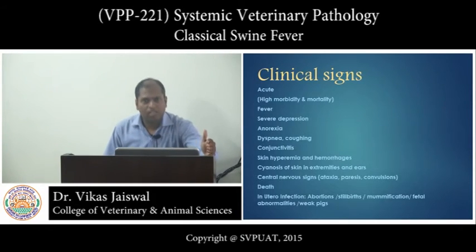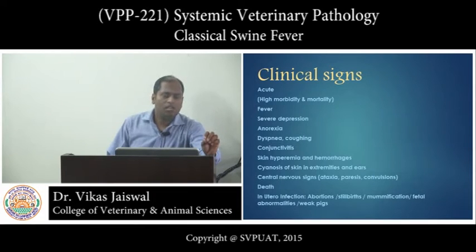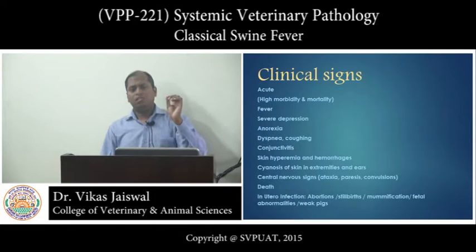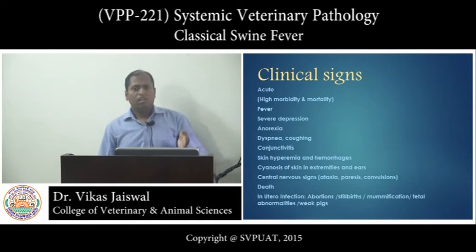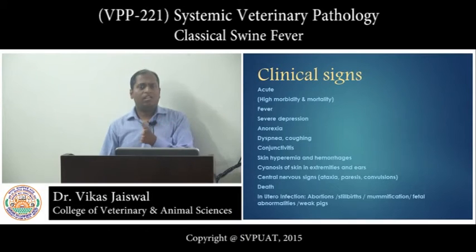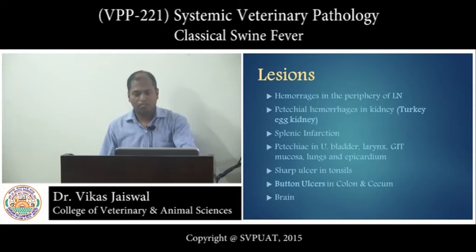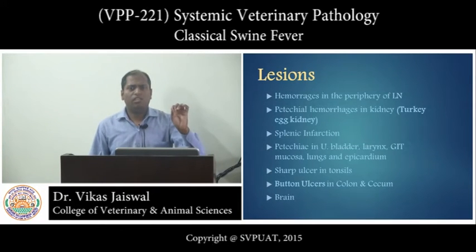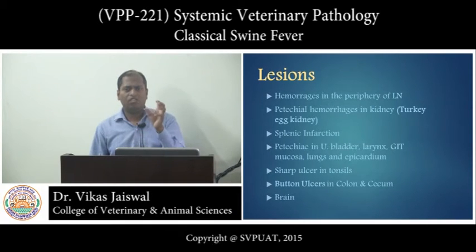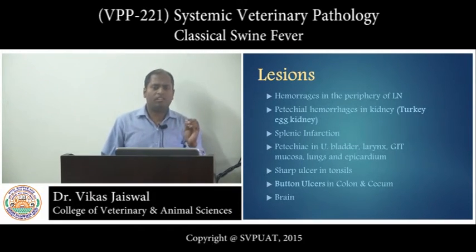Coming to the signs — in acute disease, the eyes are adherent and sticky. You can appreciate hemorrhages, irregular erythema in the ears, subcutaneous hemorrhages in the abdomen and inner aspect of the thigh. The carcass is dehydrated and terminal diarrhea may be present. The most peculiar lesion is peripheral hemorrhage in the lymph node — you can appreciate a red halo in the lymph node, which in the chronic stage becomes slightly dirty brown due to degradation of hemoglobin. This is a very peculiar and characteristic finding.